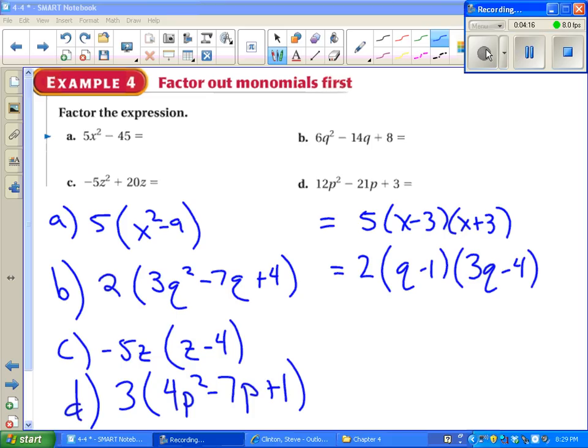a and b factored further. If you notice on c, we didn't even have a quadratic left inside the parentheses. And on part d, we did have a quadratic left in the parentheses, but if you try Clinton magic, we notice that it doesn't factor further. So we're done with this one.